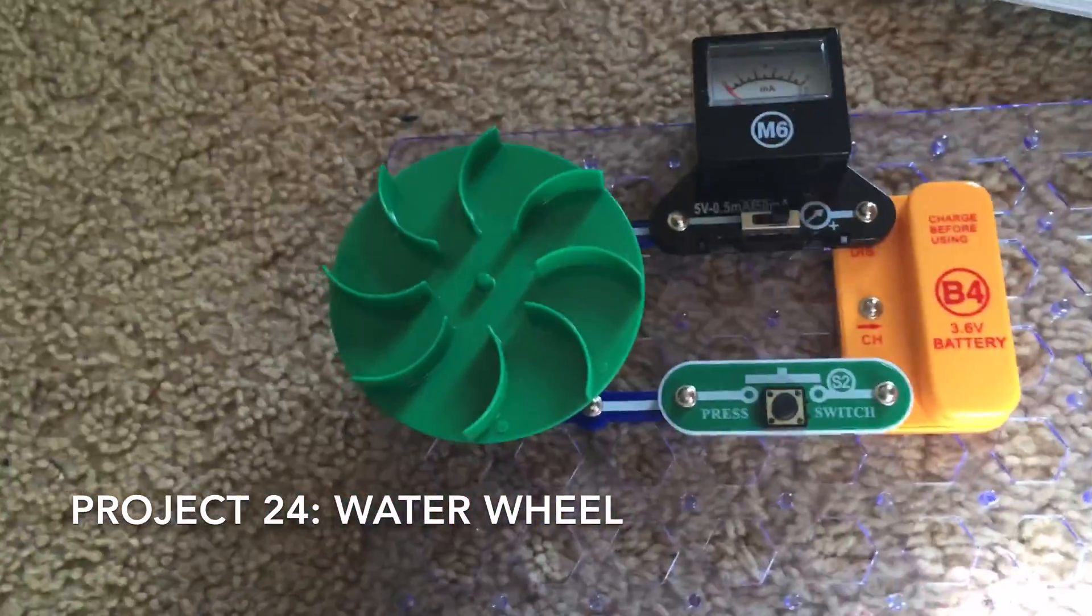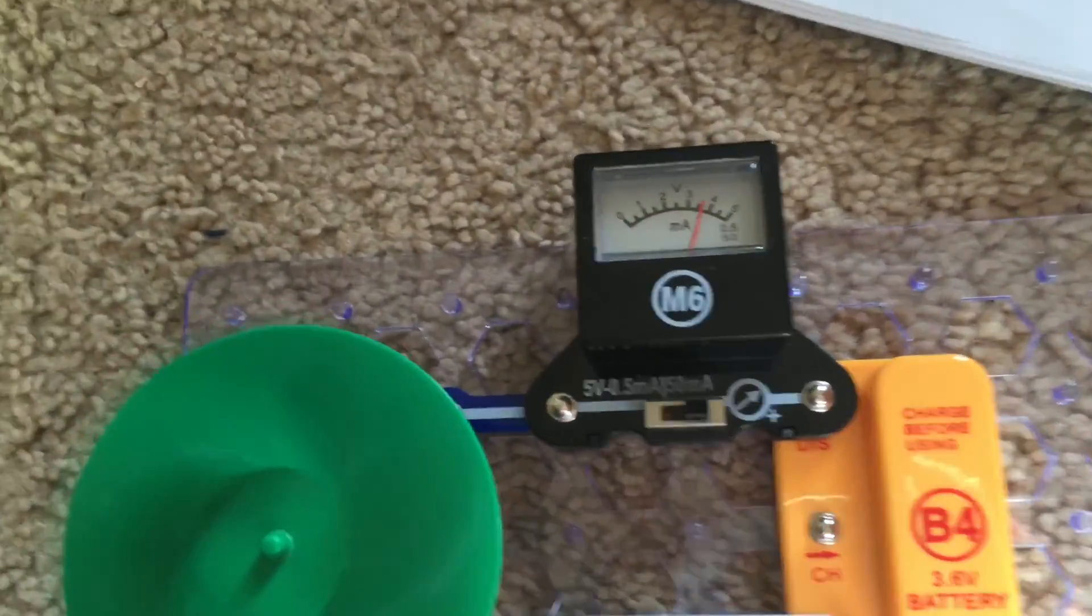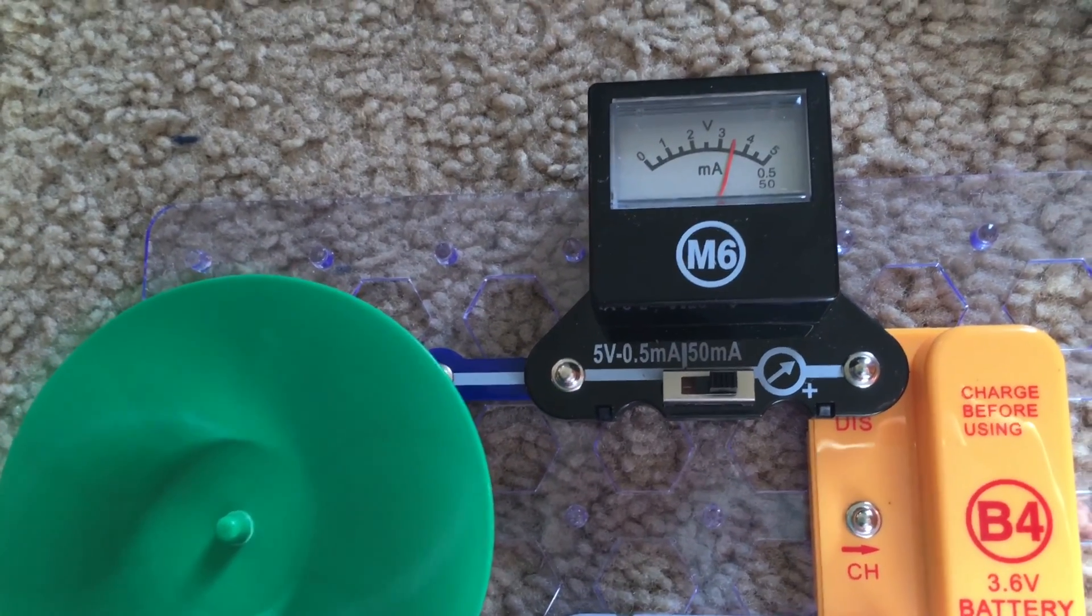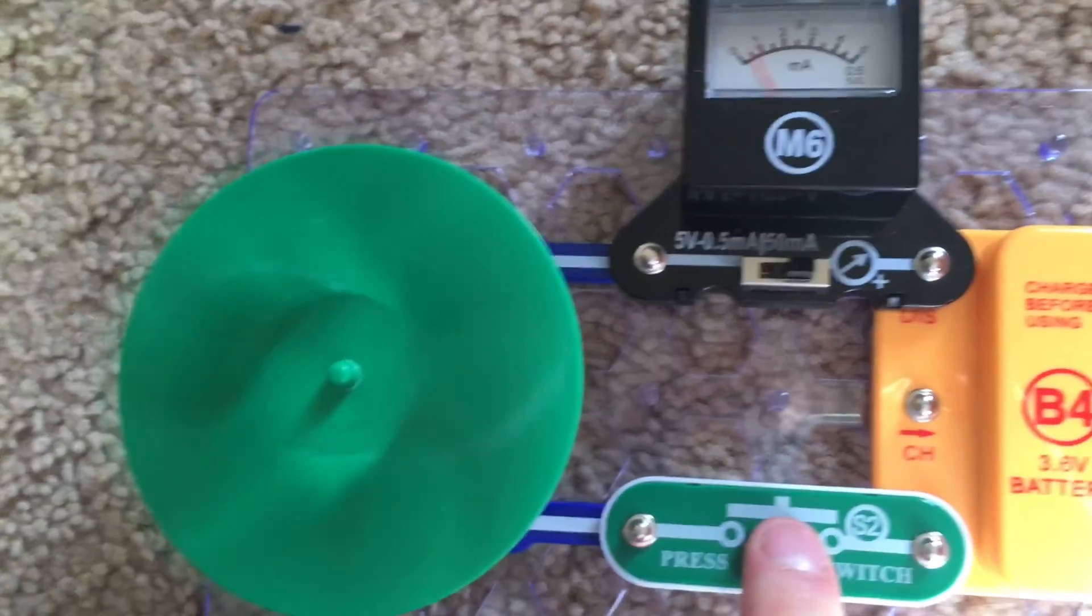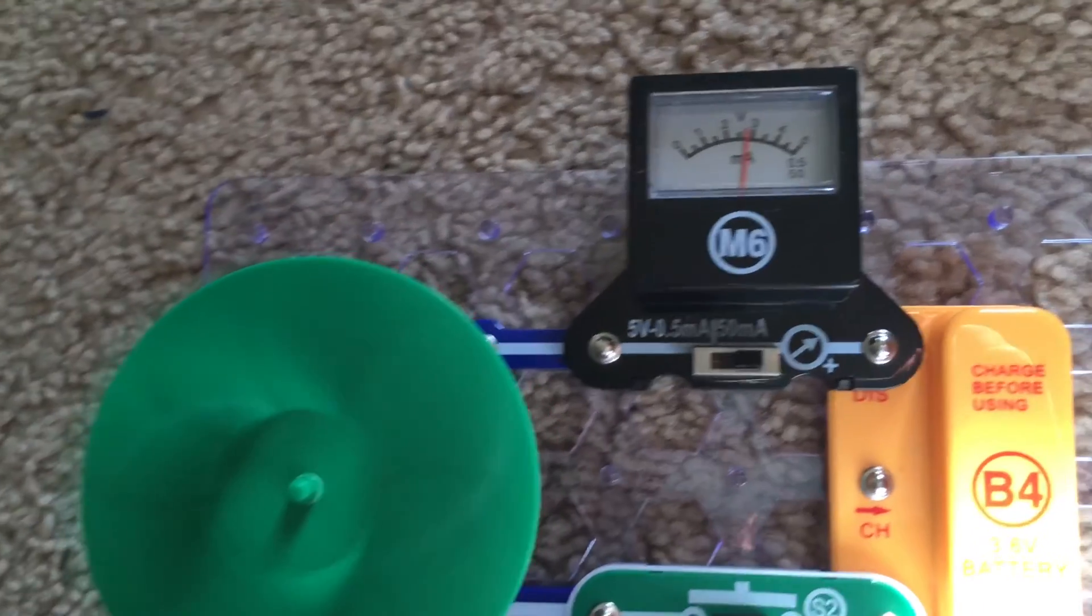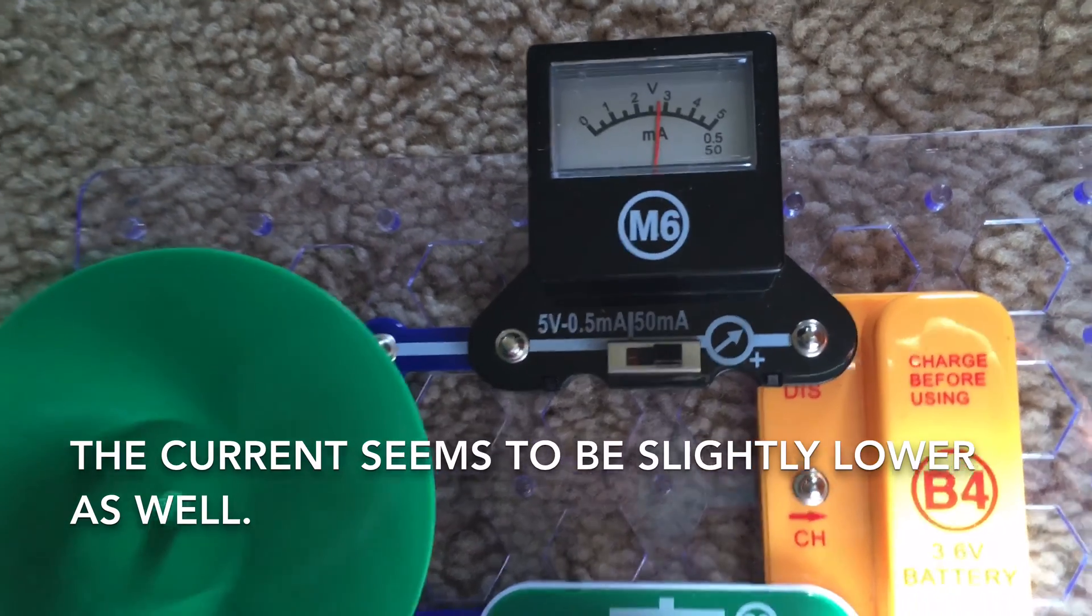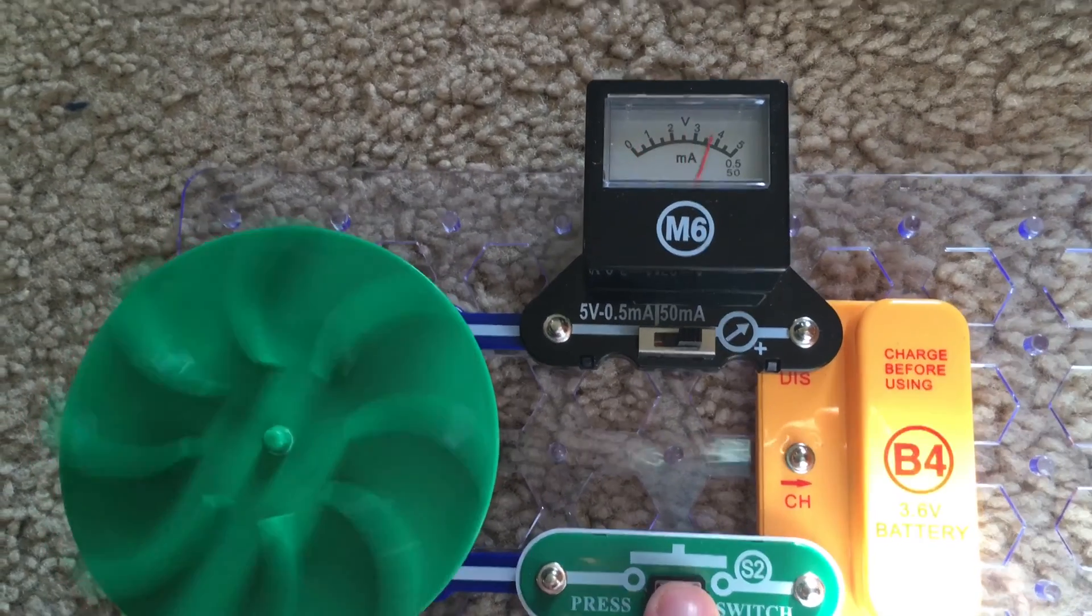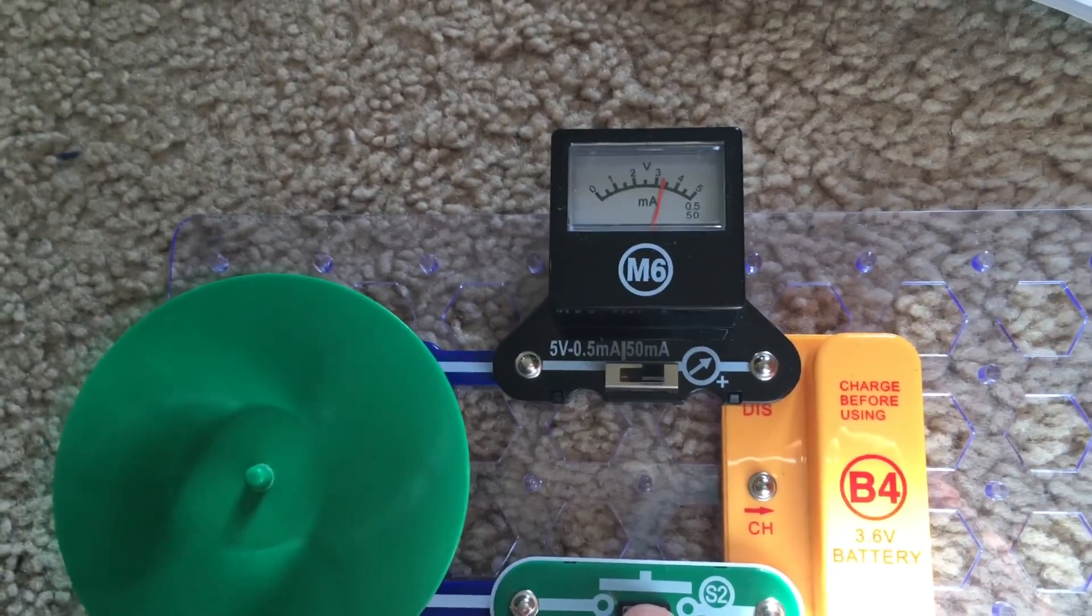We're now going to use the water wheel on the motor instead of the fan. We'll hold down the press switch. The meter is at the same setting, 50 milliamps, and now it's reading about 35 milliamps. It doesn't spin as fast as when it has the wind fan attached, and the voltage is now lower, between 25 and 30 milliamps. Let's turn it on one more time. High startup current like I said in the previous project, and then it slowly drops.